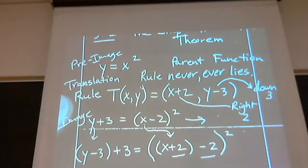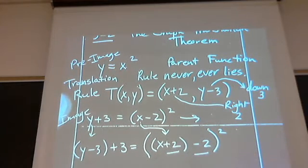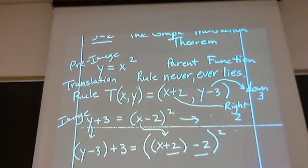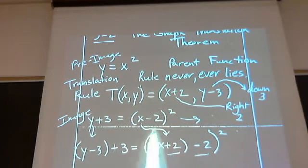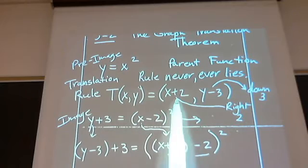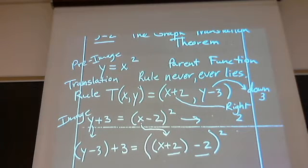This says down three. The rule never, ever, ever lies. So, whatever you would substitute to get you back to the beginning, that's what the rule said. And that's what really happened. The rule tells you the truth about what happened.